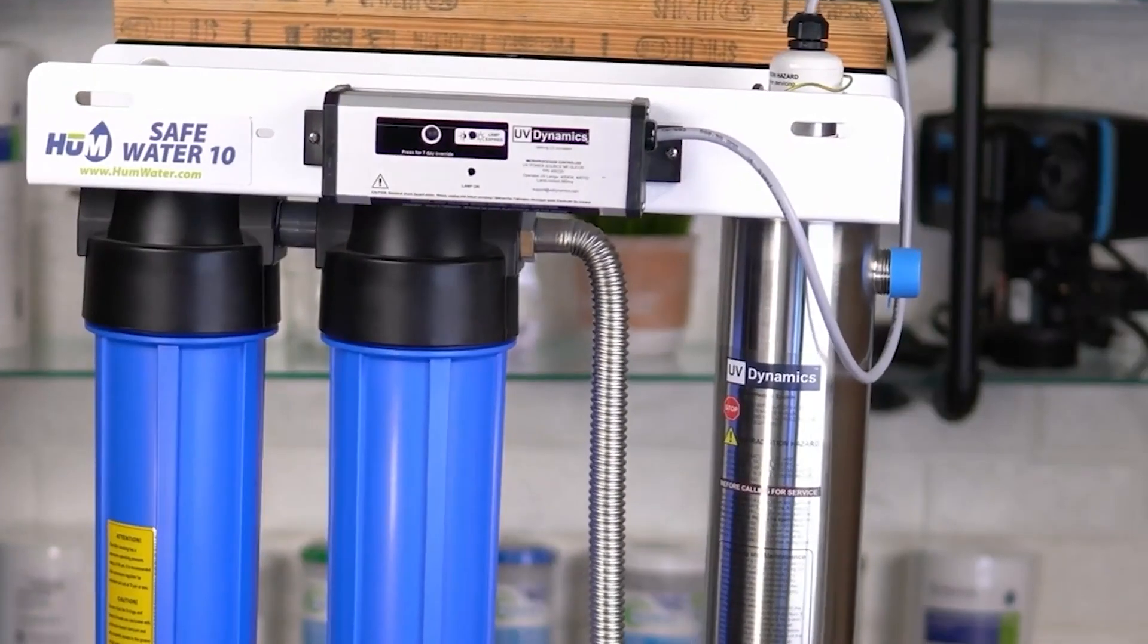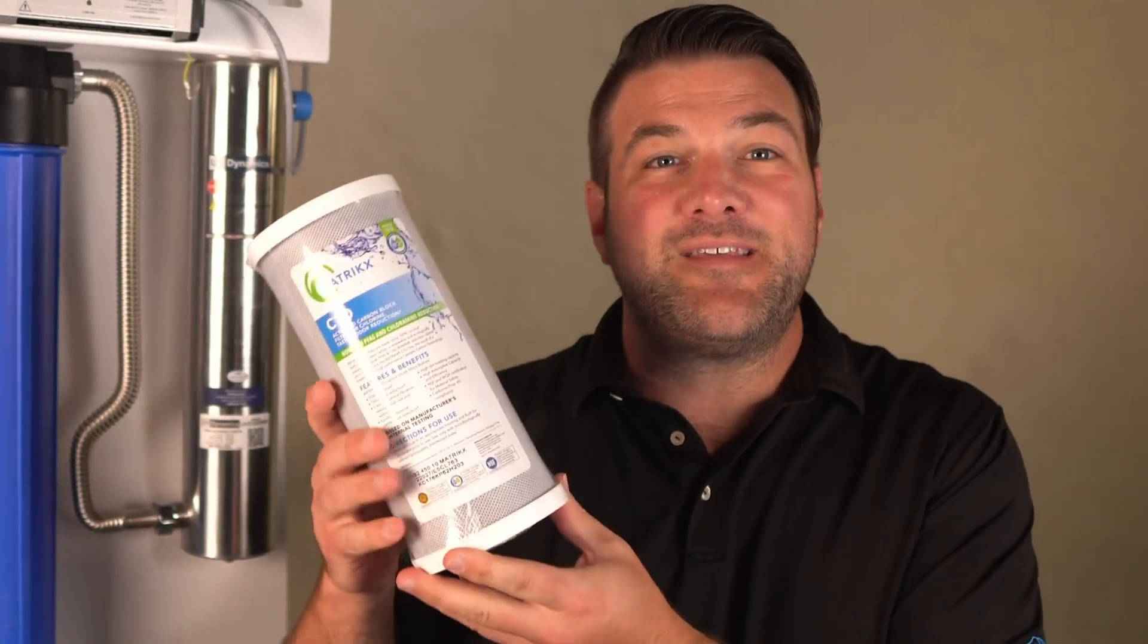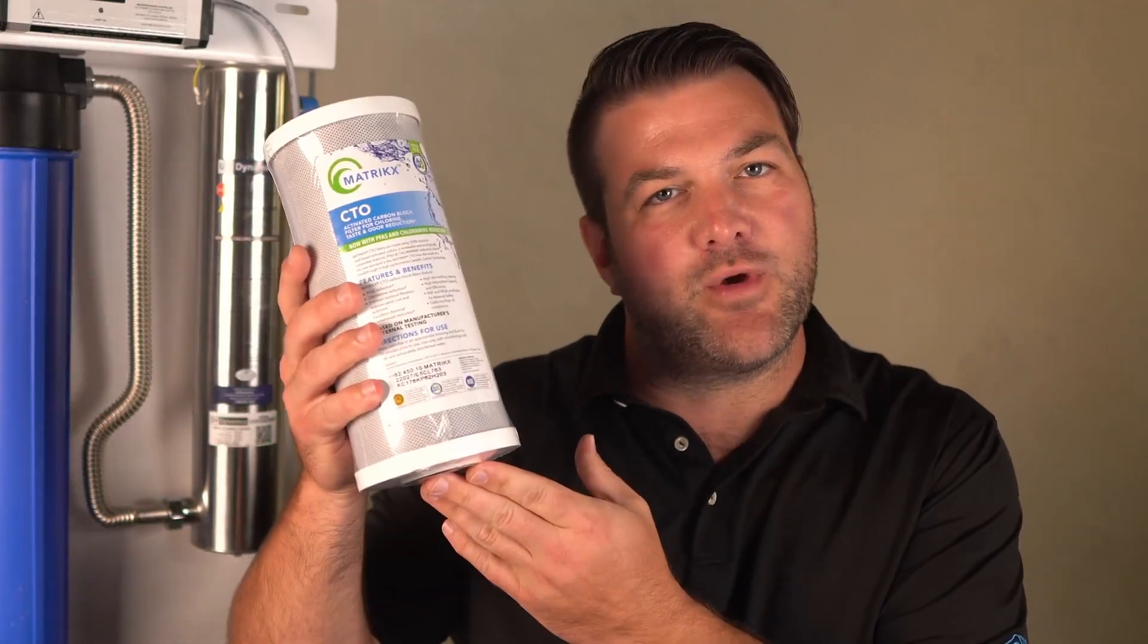Next, it goes through a carbon filter. Carbon filters reduce chlorine, VOCs, and other chemicals that might affect water taste and quality. This is an example of what a carbon filter looks like. It's not the one for this specific model, but just to give you an idea.